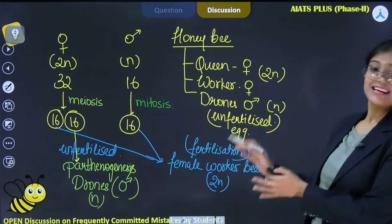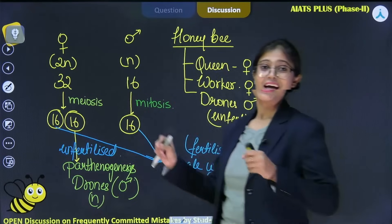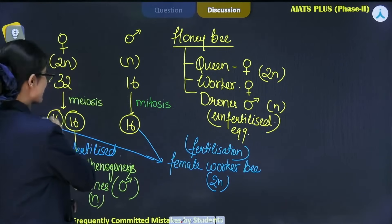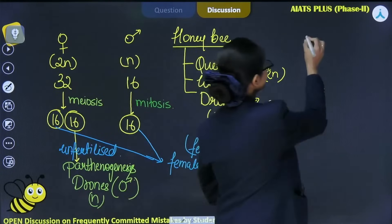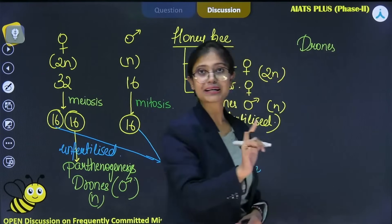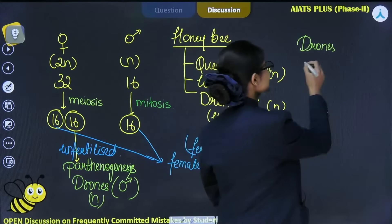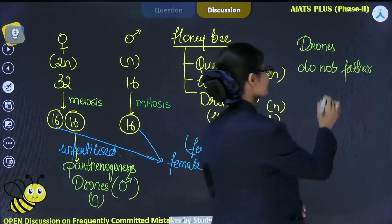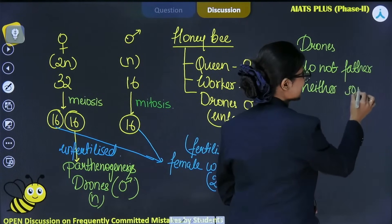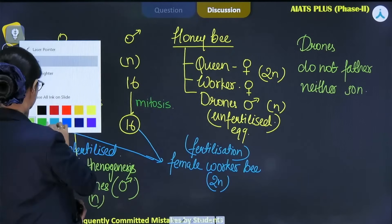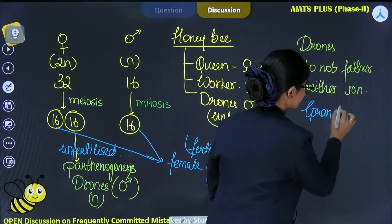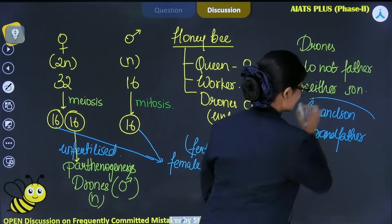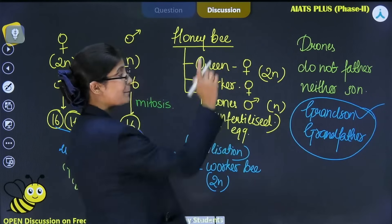Like this way, it is the sex determination in honeybee due to which the drones do not have father, neither they have son. Please remember this line really carefully that drones which are formed, which are haploid in nature and they are formed by the means of parthenogenesis, they do not have father. They do not have father, neither they have son. Neither they have son. But what they have? They have grandson and grandfather. Due to this type of sex determination, they have grandson and grandfather. But they do not have father or son.